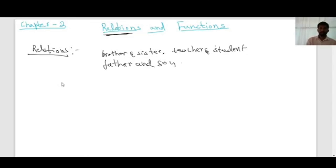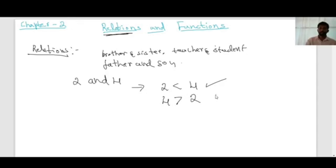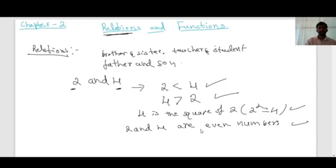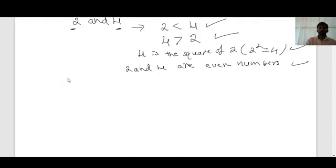In mathematics also you can see many relationships. For example, take two numbers: one is two and another is four. You can define some relations between two and four. For example, two is less than four — that's one relation. Or four is greater than two — another relation. Also, four is the square of two, since two squared equals four. Or you can say two and four are both even numbers.